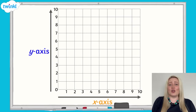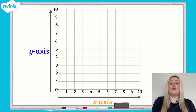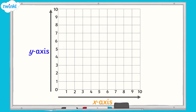When you read coordinates, you use the numbers on the x-axis first, followed by the numbers on the y-axis. For example, this point is located at 6, 7.